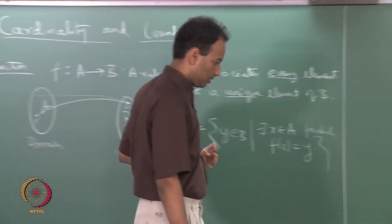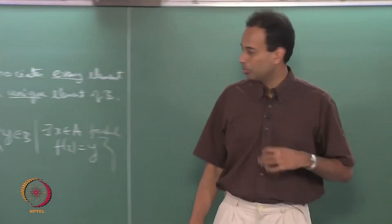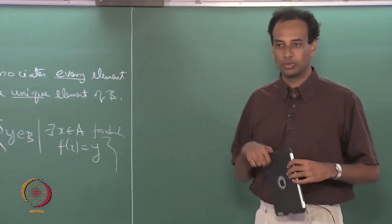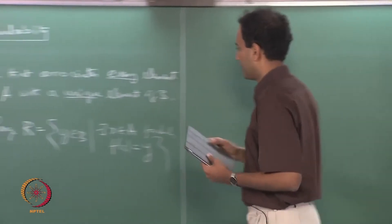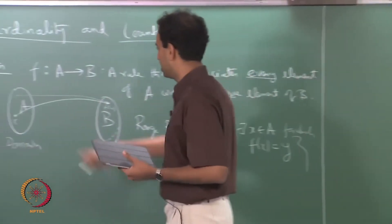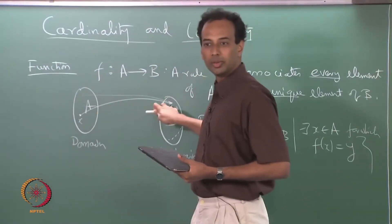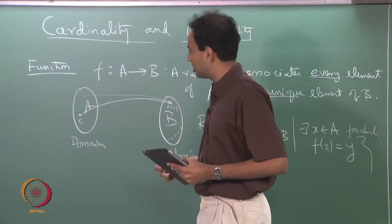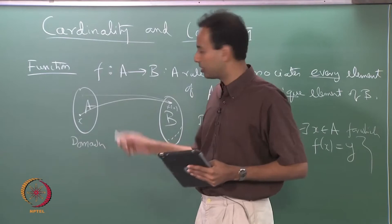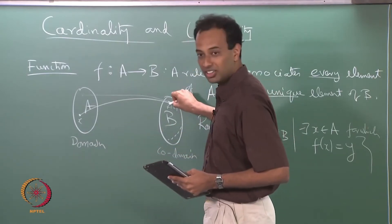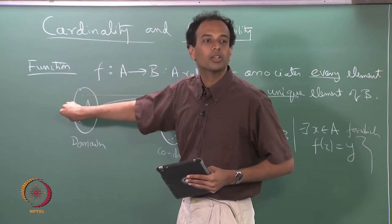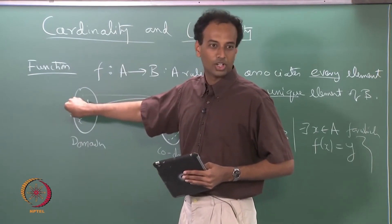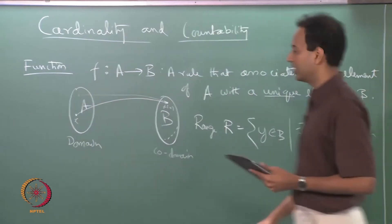There are a few more specific kinds of functions of interest. For a general function, multiple elements in A can map to the same element in B. A function for which that does not happen — where every point in the range has a unique preimage — is called a one-to-one or injective function.